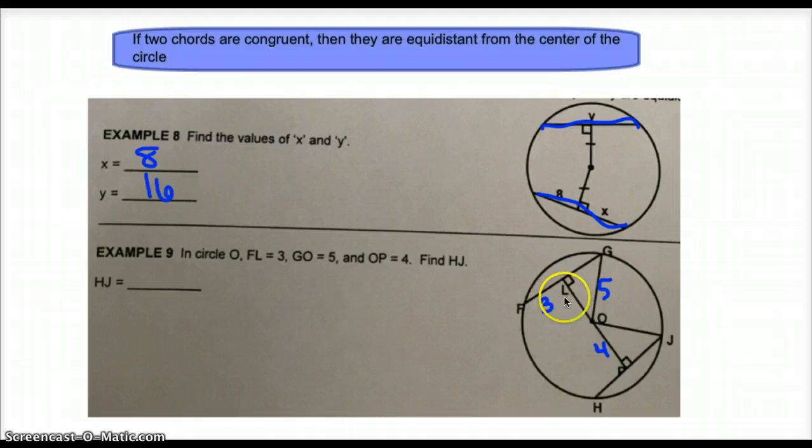Continuing on with example 9, I've taken the liberty of labeling our given information. We're asked to find the length of chord HJ, which is right here. So in order to be able to do that, it might be helpful to know how far it is from this vertex, which I believe is P, to J. We know that every radius has a length of 5. So O to J must also be 5. This forms a right triangle. Again, use your Pythagorean theorem. You can figure out that that missing side is 3. Because this radius is drawn perpendicular to this chord, this must also be 3. So H to J has to be 6 units in length.